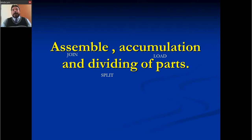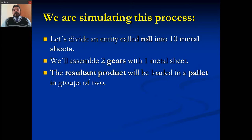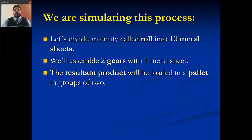Today we're going to talk about the assembly, accumulation, and dividing of parts using ProModel and its commands like join, load, and split. We're going to simulate this process. We're going to divide an entity called roll into 10 metal sheets, then assemble two gears with one metal sheet, and the finished product will be loaded into a pallet in groups of two.